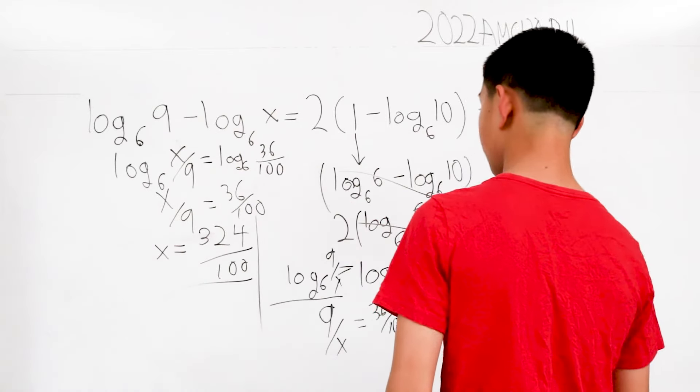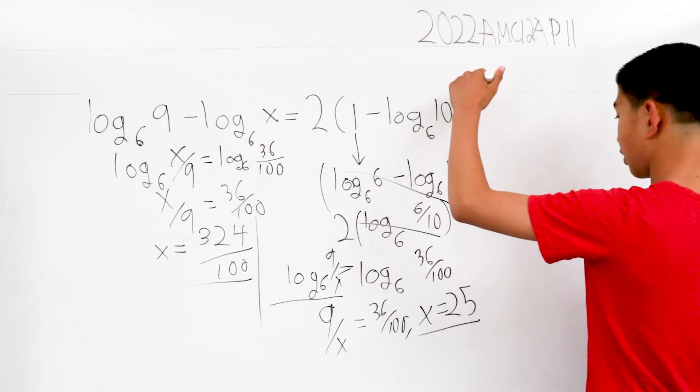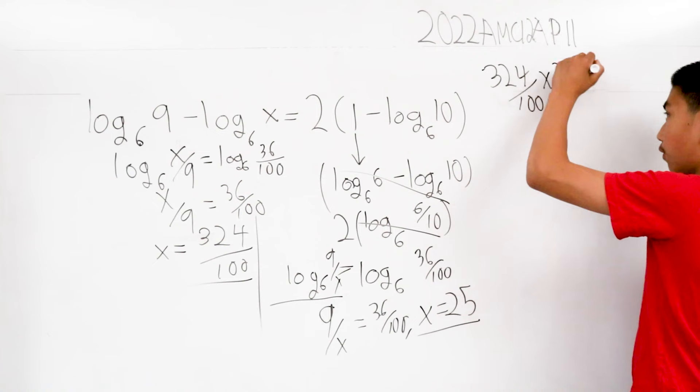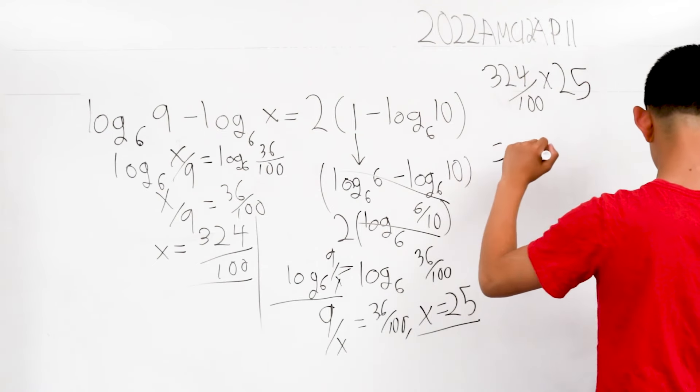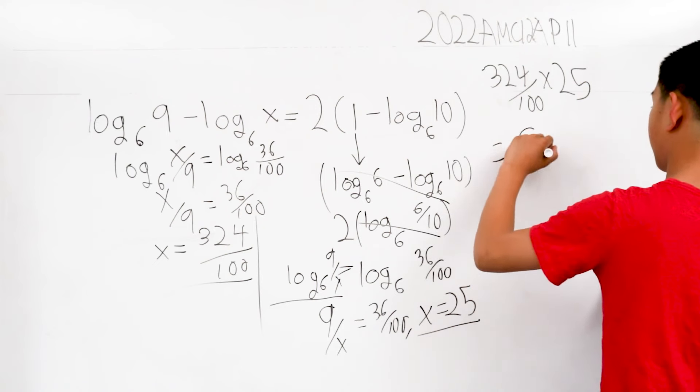We have the other x, and those are only the two possible scenarios. So our answer will be 324 over 100 times 25. That gives us our final answer of 81.